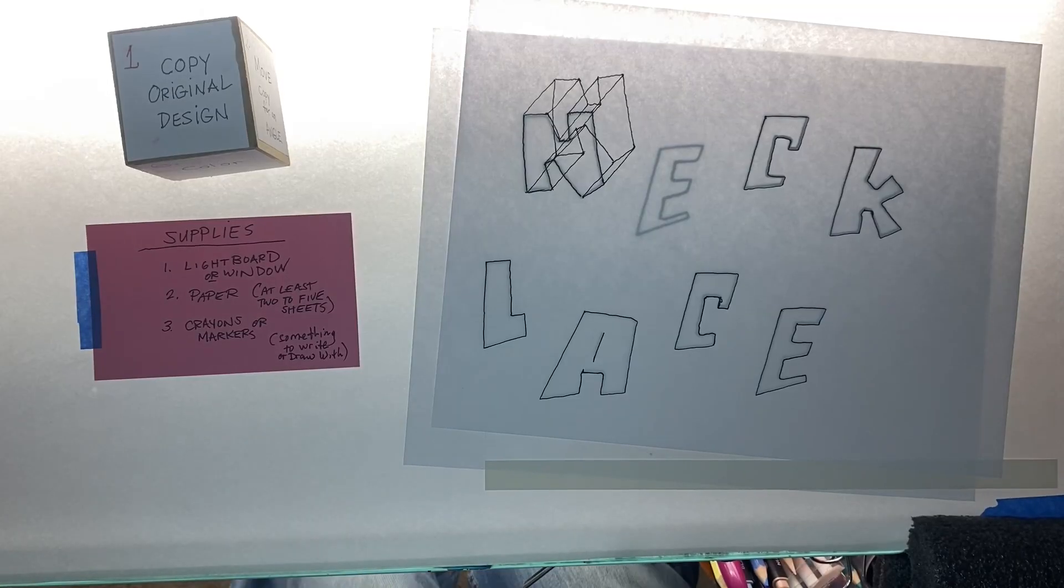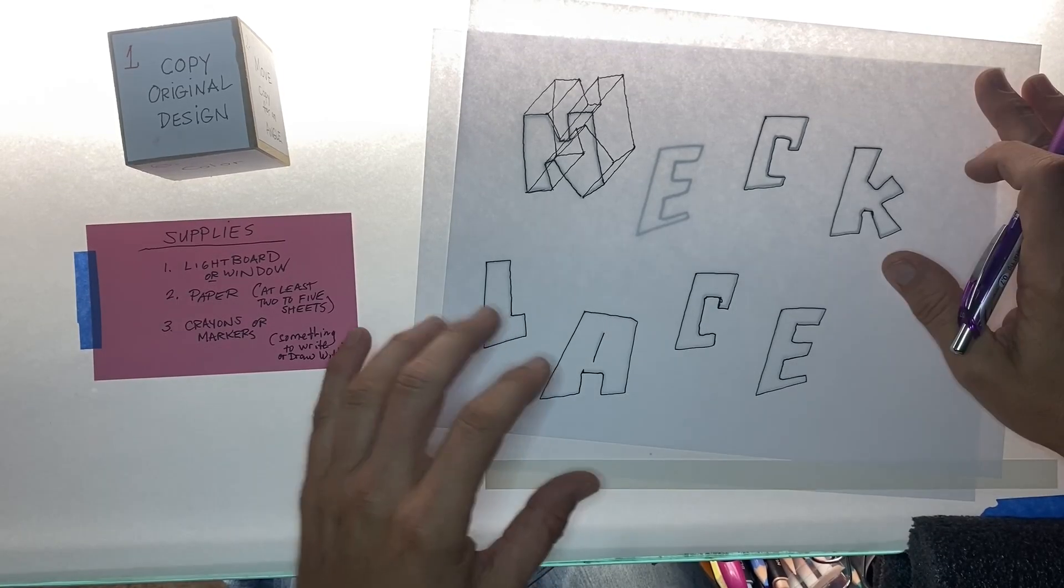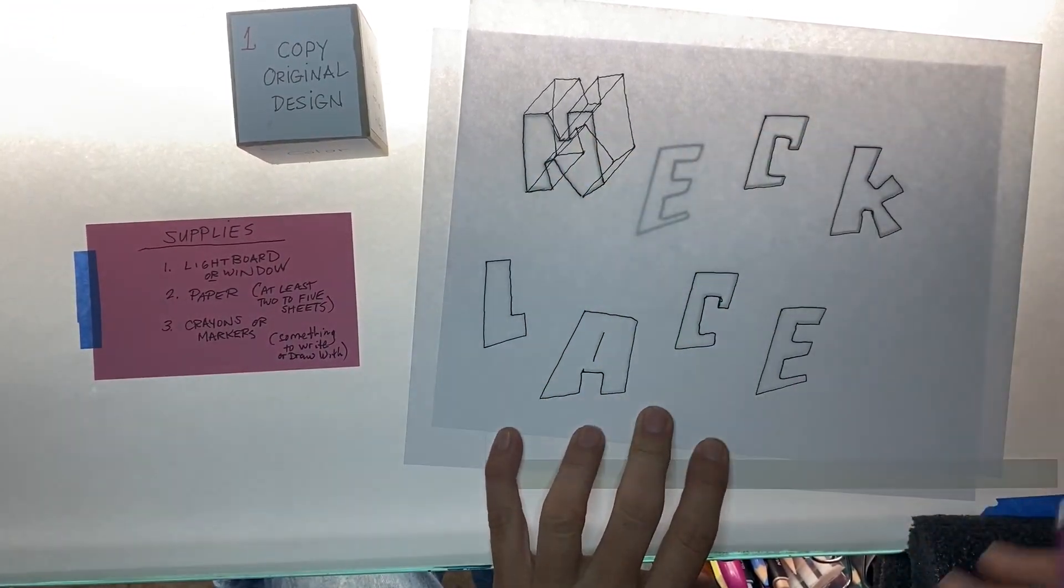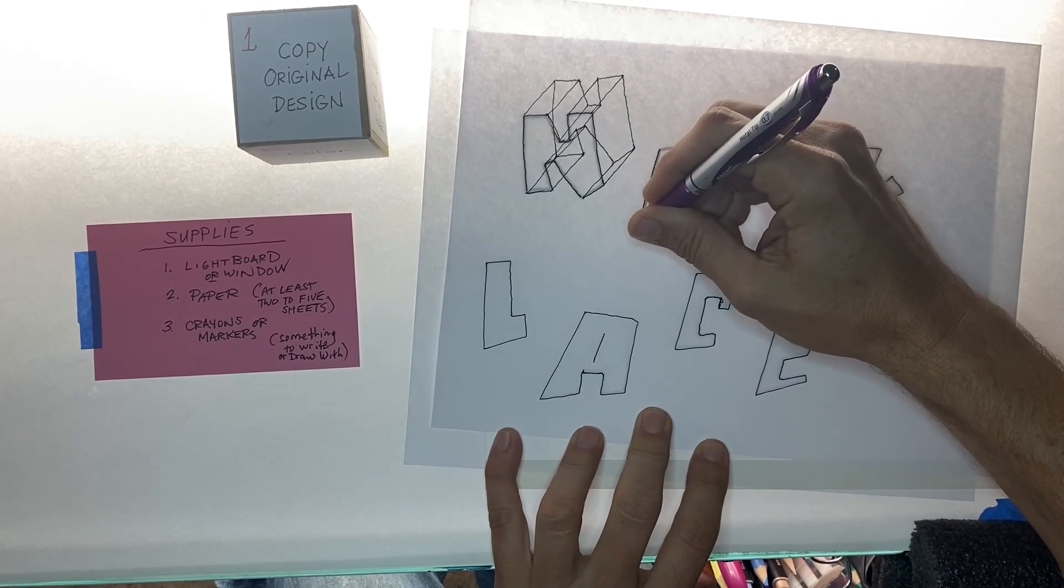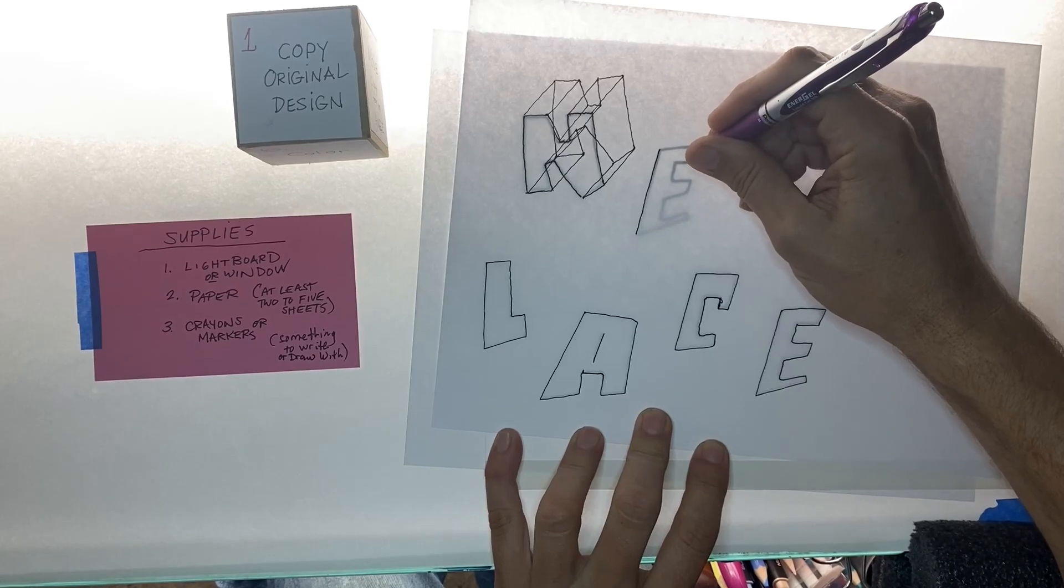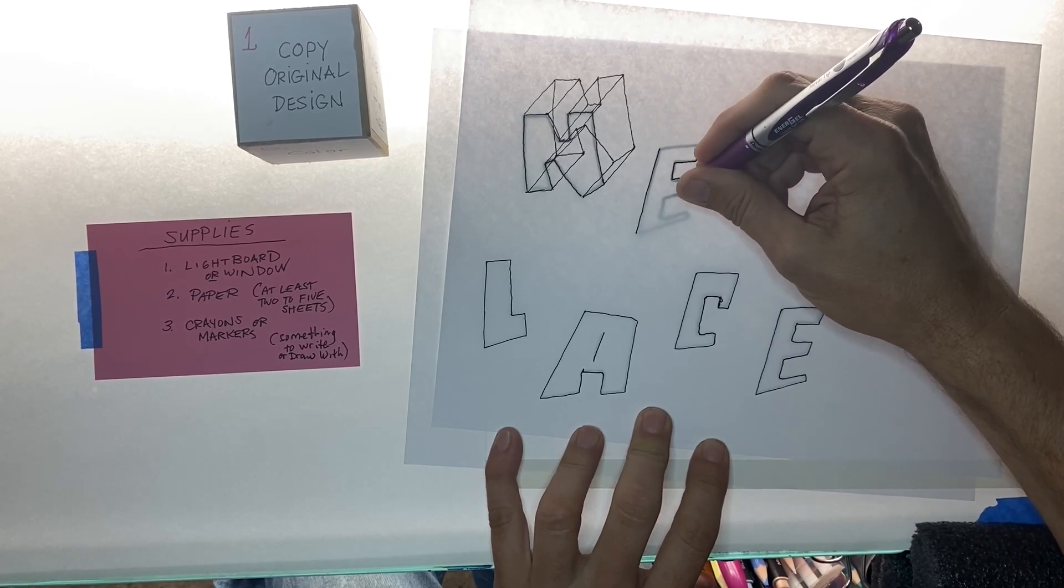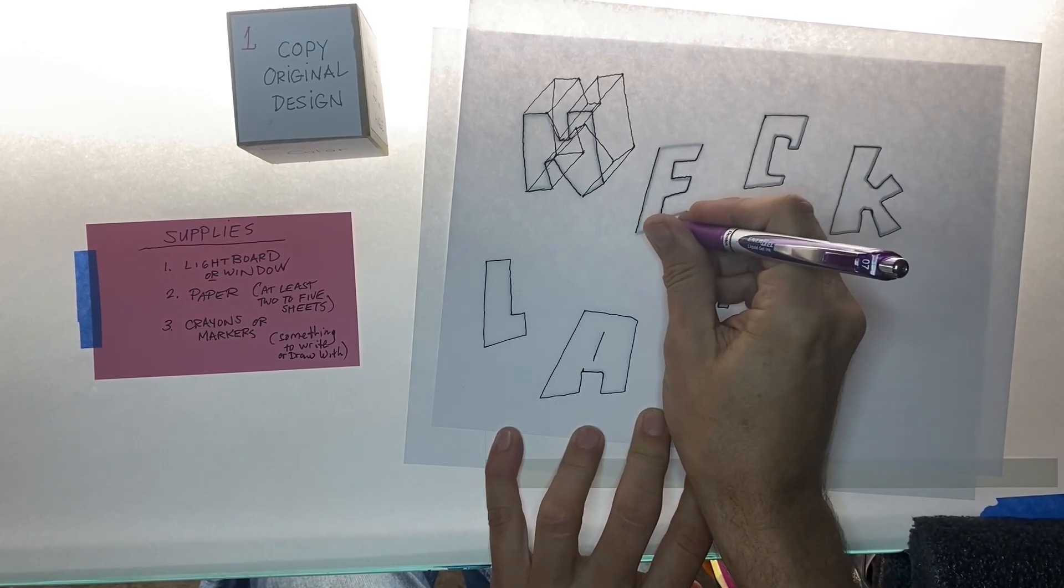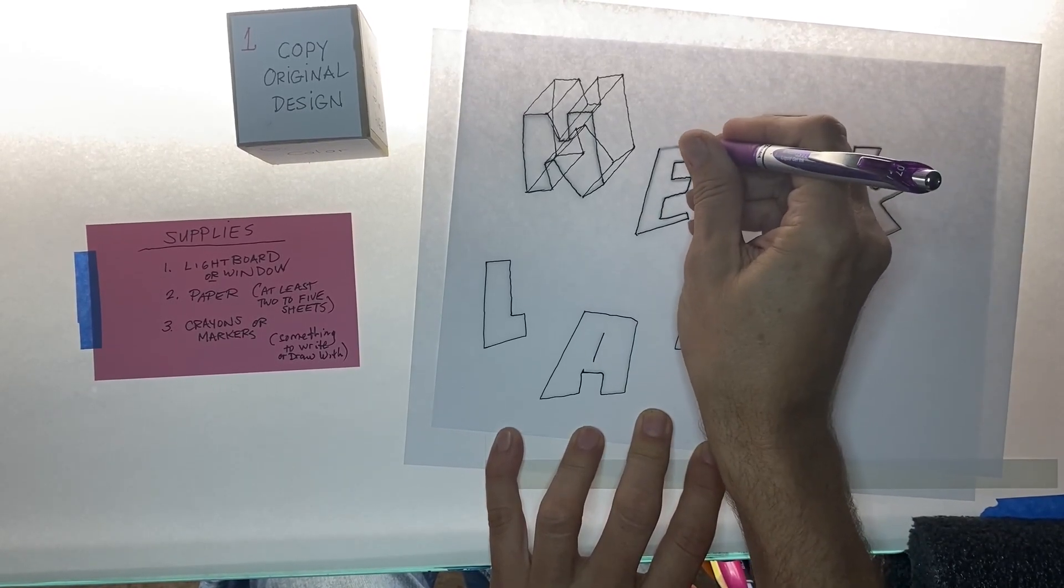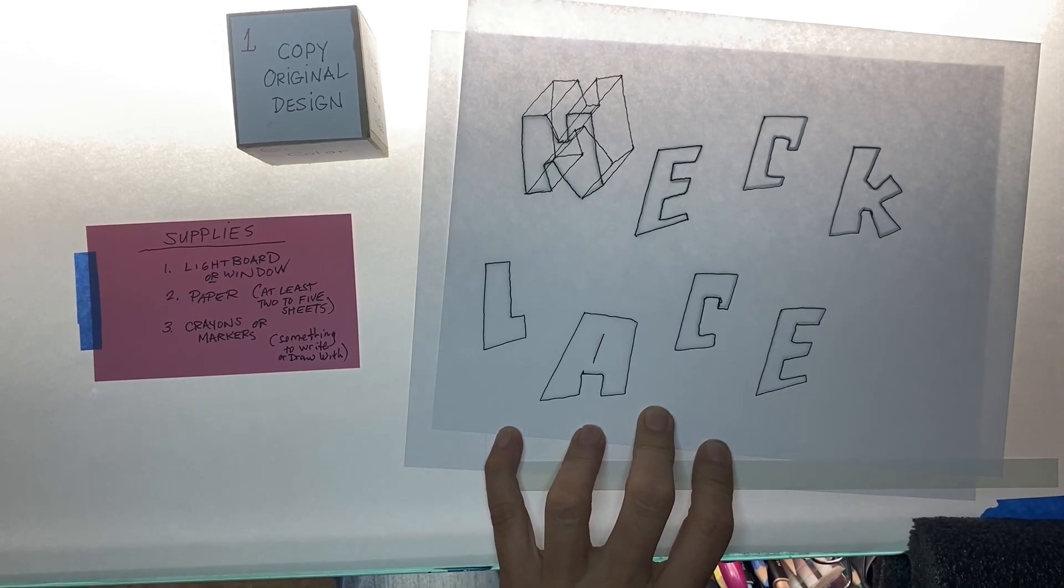This is the demonstration portion of my necklace video. First things first, we've got everything but the E drawn in. The longest part of legible graffiti is transferring that original design onto your new piece of paper. Once you have that original design copied, the other steps should go quickly.